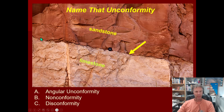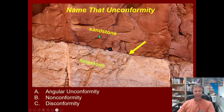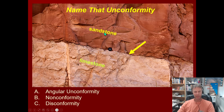Here's our next one: an unconformity with a lens cap for scale, and we have sandstone sitting over limestone. Looking above and below the unconformity, we see sedimentary rocks. Now we check how those rocks are oriented. The sandstone bedding is tilted in one direction, and the limestone is running in the same direction. Because sandstone and limestone are parallel to each other, this unconformity is a disconformity.